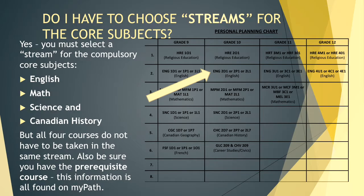A common question asked by grade nines when it comes to course selection is: do I have to choose streams for the course subjects? And the answer is yes. In grade 9, there was no stream for math — it was a W course — but other classes you had to choose academic or applied. That will continue in grade 10 for English, math, science, and history.